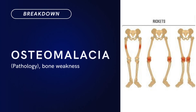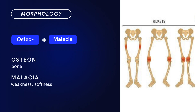Compound Term: Osteomalacia. Brief Definition: Bone weakness. Term Morphology — a compound of osteo plus malacia. Osteo is derived from osteon, meaning bone, and malacia means weakness or softness. There you have it: osteomalacia.